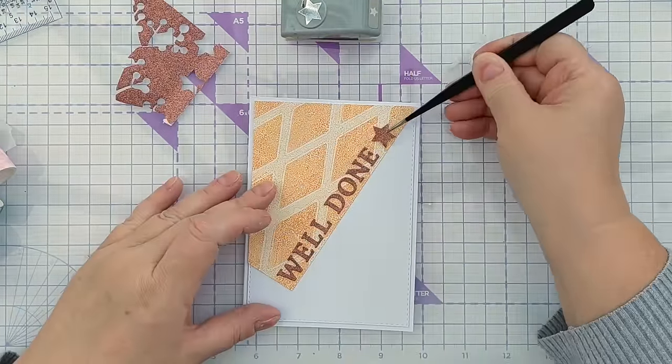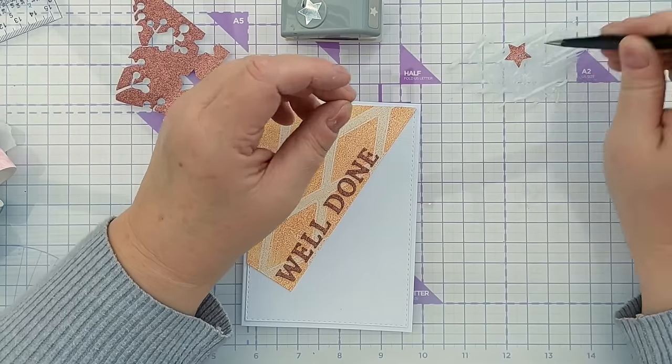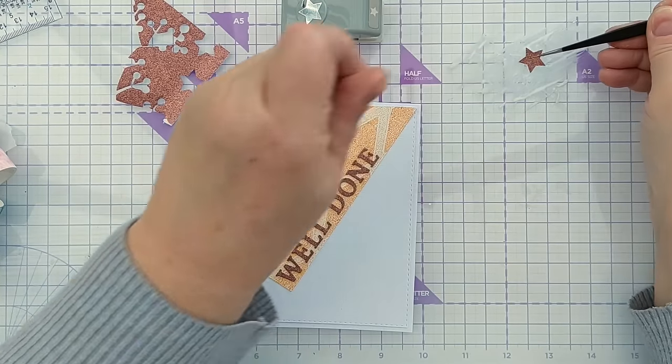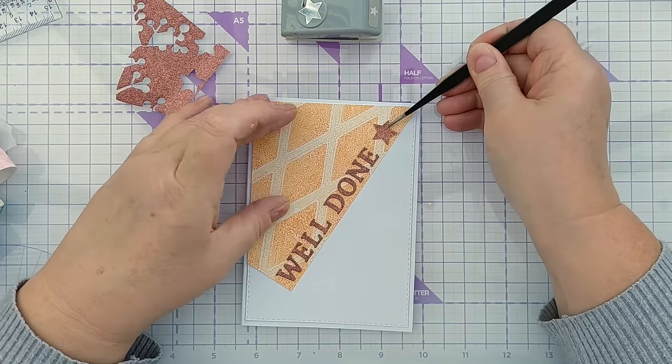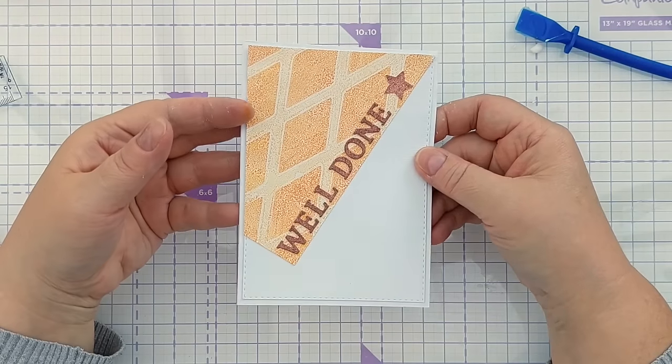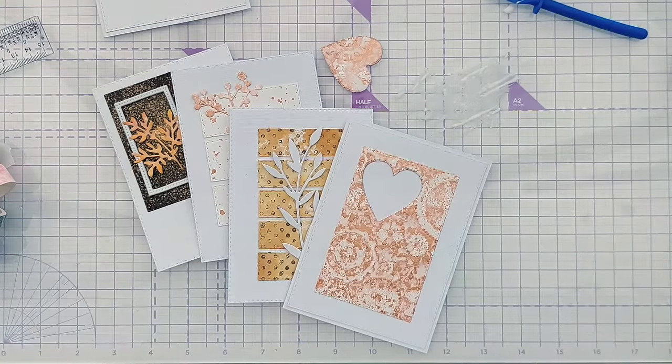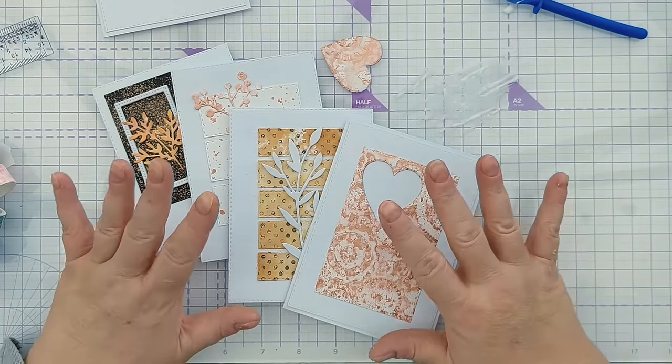I've used a star punch to punch out a star because I think stars always go well with 'well done' or congratulations. I'm going to add that at the end there, and I think that will do for that one. I'm going to take a break now while I let my brain percolate on the next steps for these four.